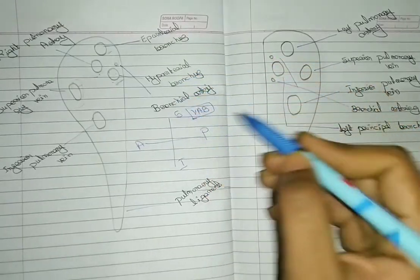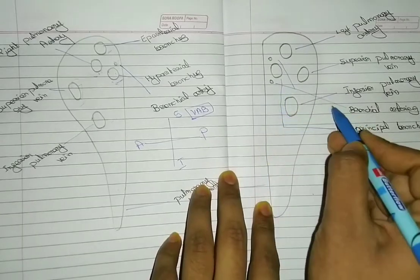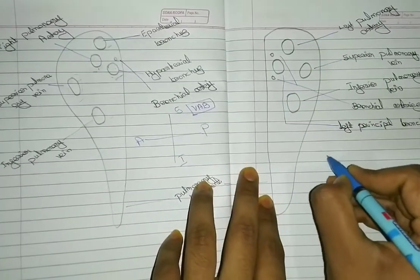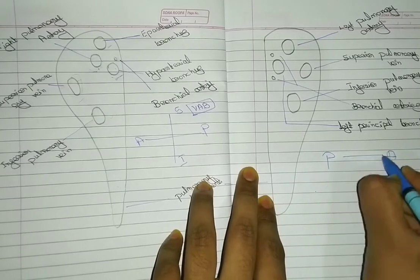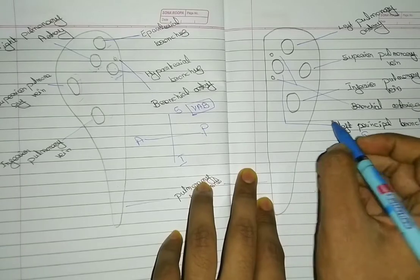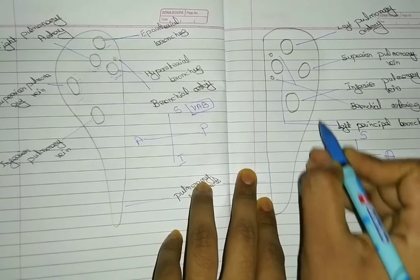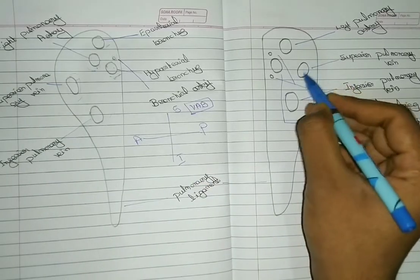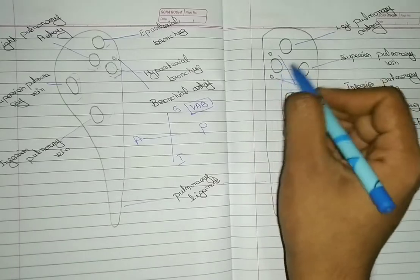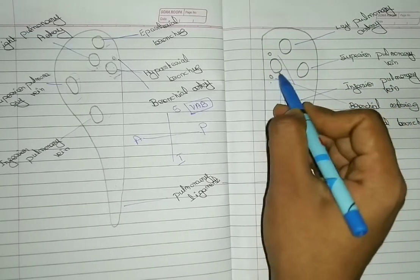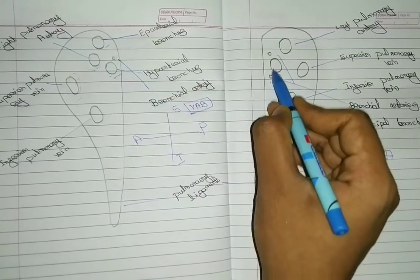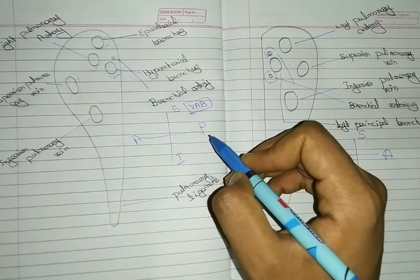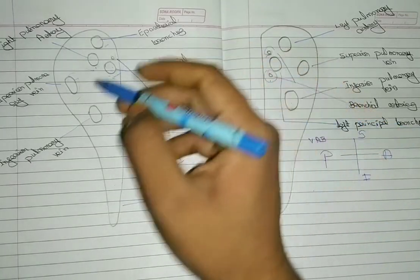Now we will study the structures in the Root of the Left Lung. From anterior to posterior: Vein, Artery, Bronchus — the same V, A, B arrangement. From superior to inferior: Left Pulmonary Artery, and Bronchus. There is only one bronchus in the left lung and two bronchial arteries in the left lung.